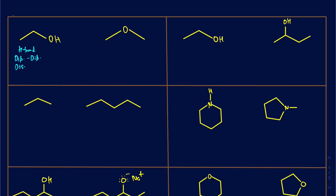On the right side, however, I do see an oxygen there, and the carbons on the right are the terminals, but there is no hydrogen directly connected to the oxygen, so hydrogen bonds are out of question. But this is still polar because the carbon and oxygen have electronegativity differences, giving this a partial negative and these carbons a partial positive. So that is going to be dipole-dipole interactions, and dispersions are going to be there as well.